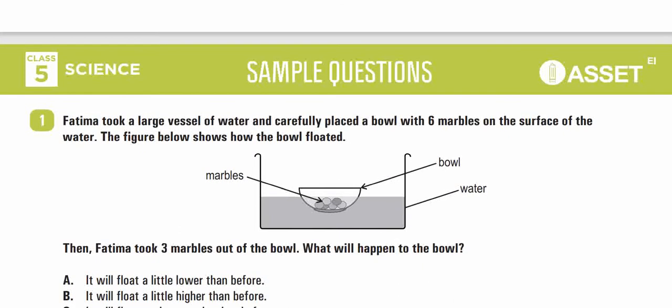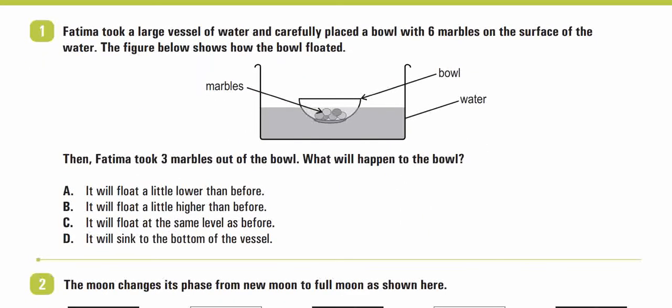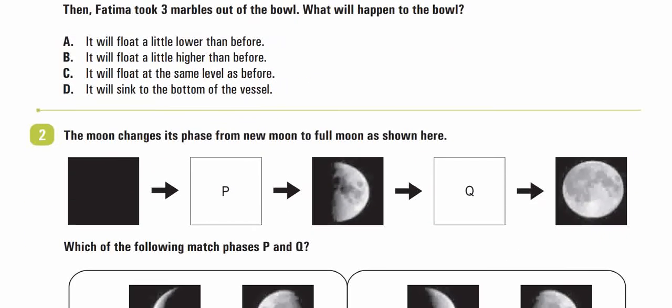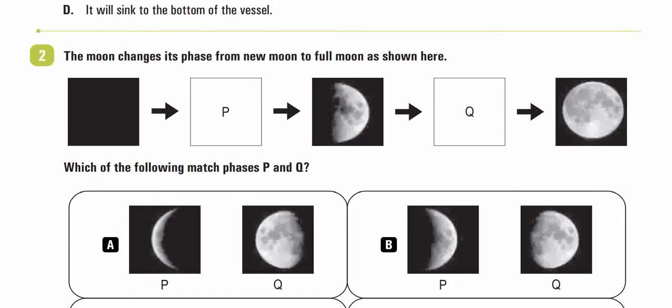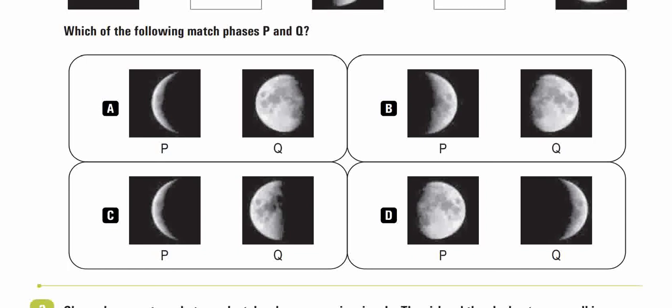Let's proceed to the questions for grade 5. Option A and B are visible on screen; option C and D you can see now.